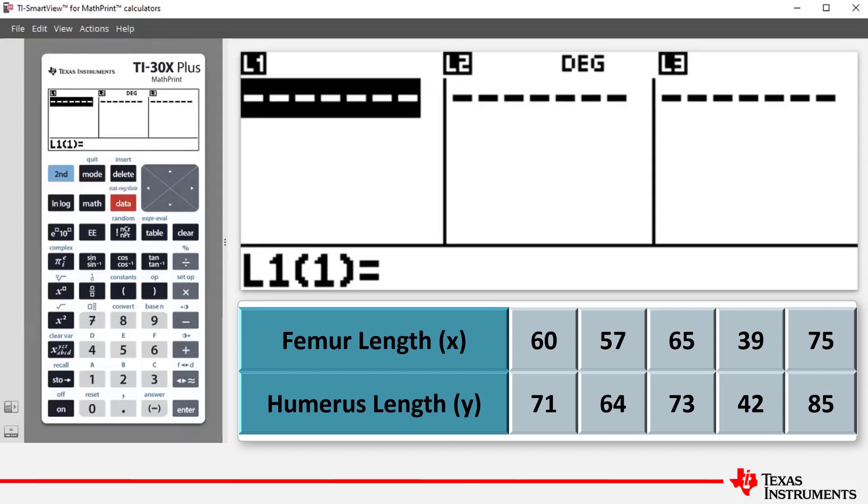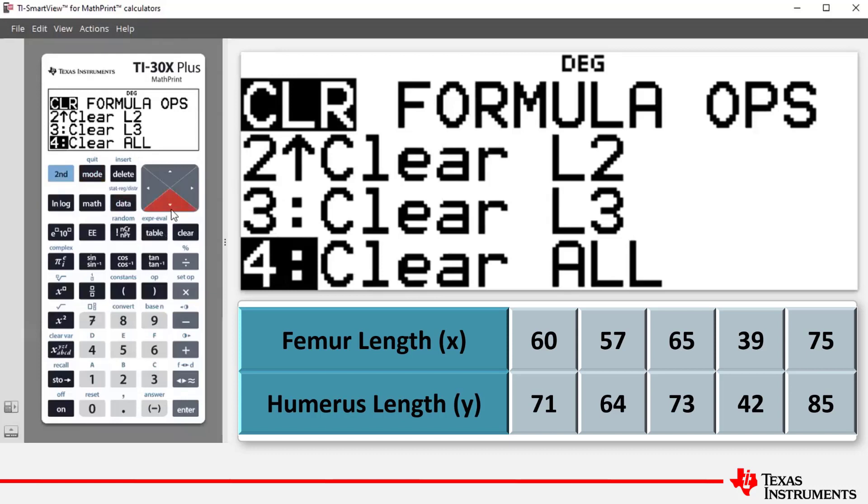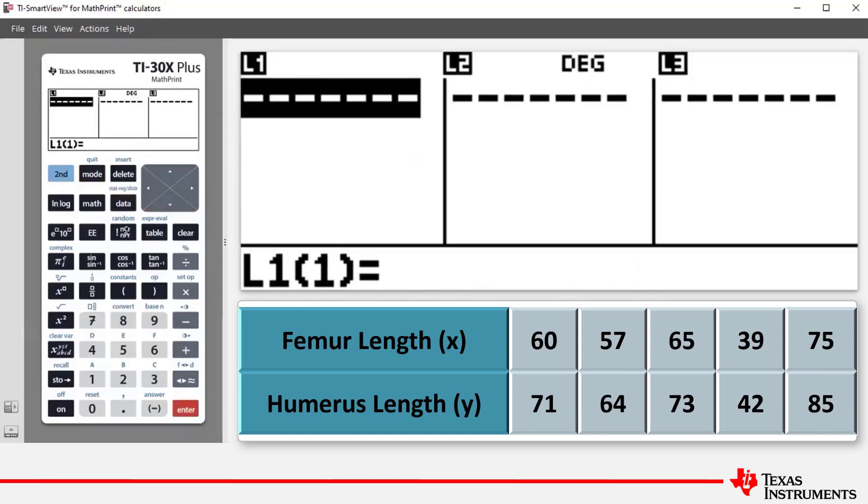Now, if you are required to clear any of the lists, then press data again and then scroll down to clear all and press enter or just press 4. And what that will do is it will clear your lists of any existing data. So we have a clean slate and now let's enter the data for femur lengths and humerus lengths.